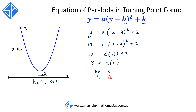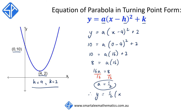Then dividing both sides by 16, we get a = ½. Now that we have the values of a, h, and k, we can deduce that the equation of the parabola is y = ½(x - 4)² + 2.